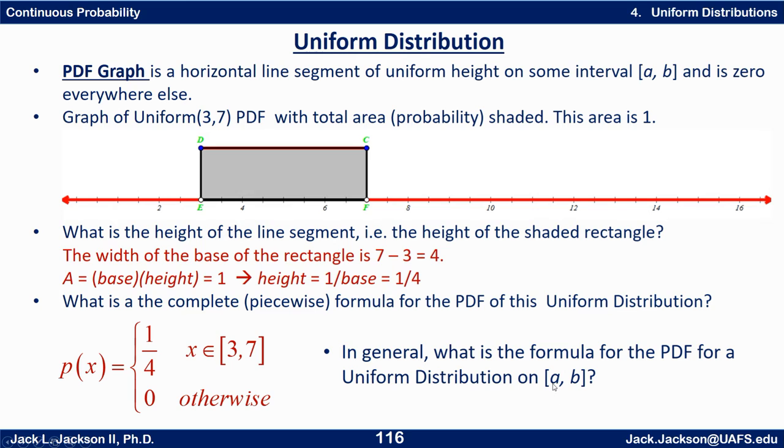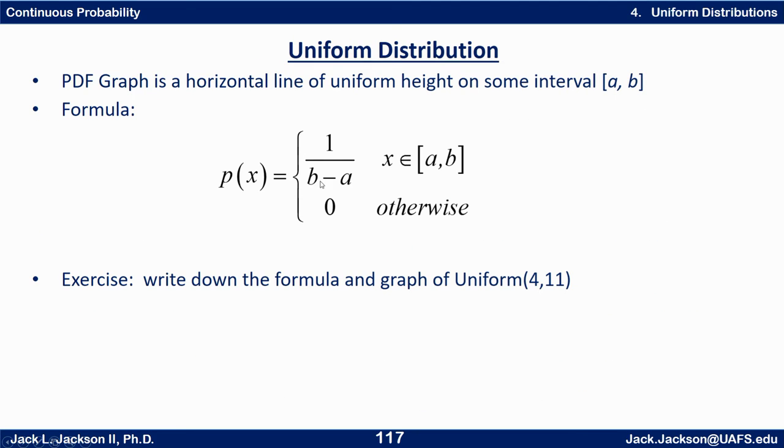So in general, how can we take the a and the b and come up with the formula? The one basically comes from the fact the area is one. The four is just the width. Well, what's the width here? Well, it's b minus a. So the probability is p(x) or PDF of x equals 1 over (b minus a) for x between a and b, and zero otherwise.